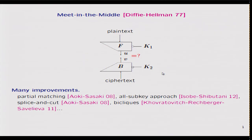One of the main advantages of this kind of attack is that they usually have a very low data complexity. What we propose here is some generalization of this attack.